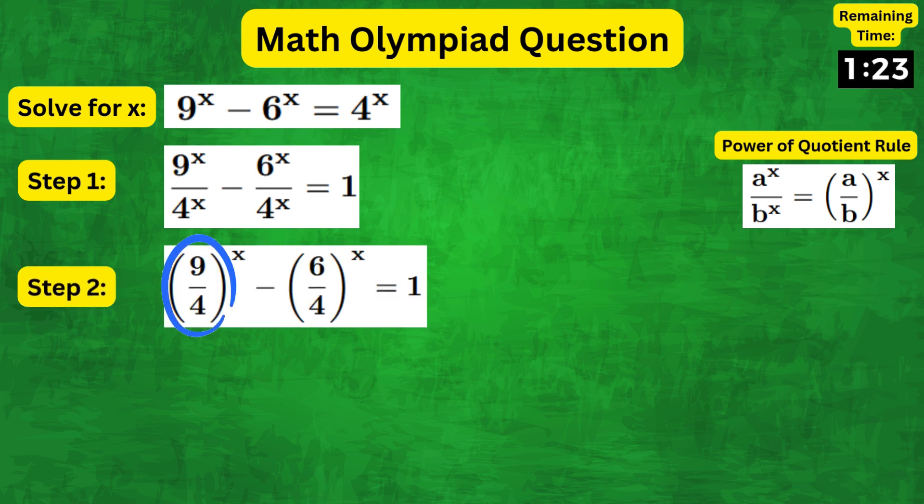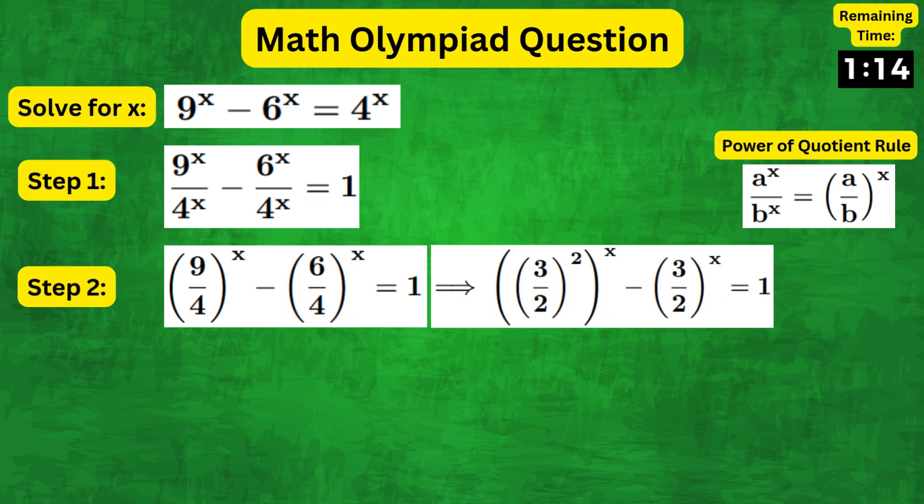Now, 9 over 4 can simply be written as 3 squared over 2 squared. Similarly, the second fraction can be simplified as 3 over 2. Therefore, we can write the problem as 3 over 2 squared to the power of x minus 3 over 2 to the x equals 1.